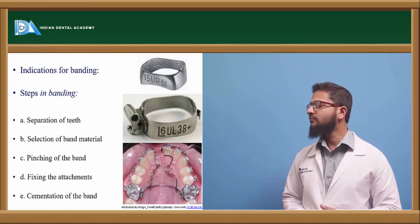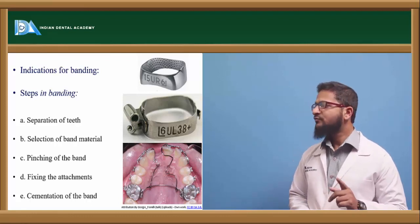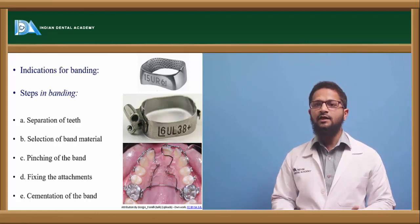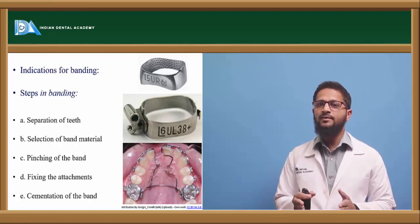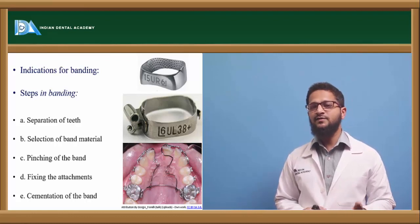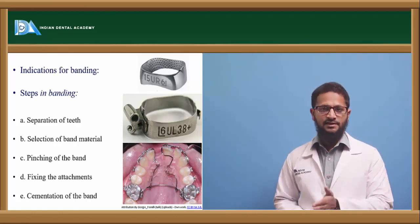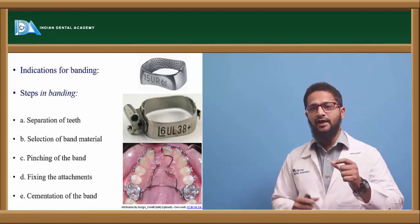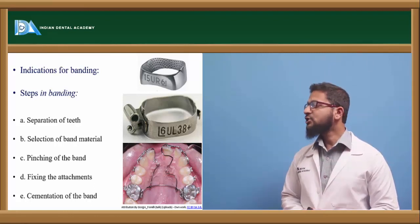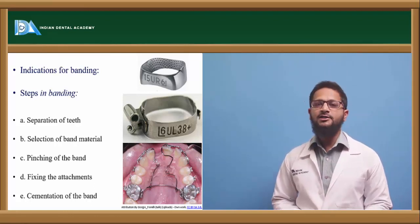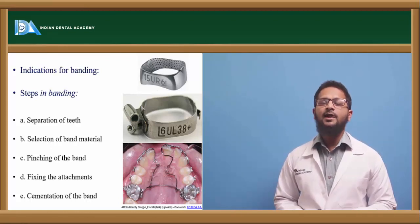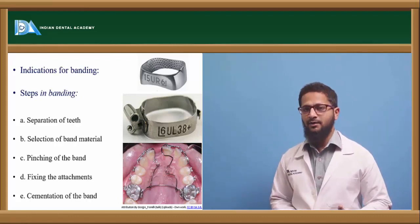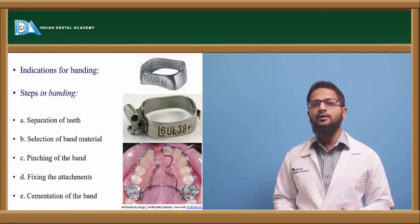The steps in banding are as follows. First is separation of the teeth: since the band material is a bit thicker, it cannot pass through the interproximal area, so the posterior teeth must be separated from each other using various types of separators. The separator must be kept in place for at least 24 hours. Next is selection of band material: posteriors require thicker and wider material while anteriors require thinner and narrower material.